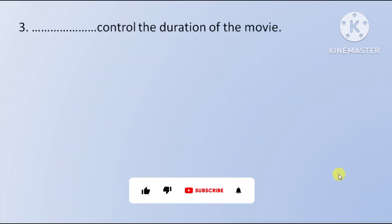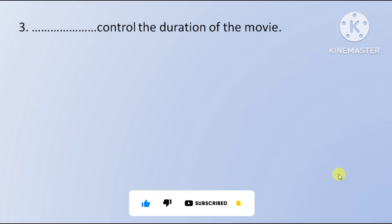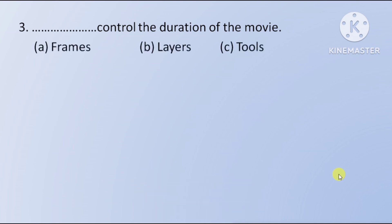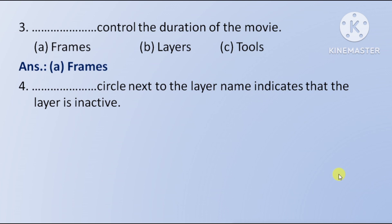Next question: what controls the duration of the movie? Option A: Frames, Option B: Layers, Option C: Tools. The right answer is Option A — Frames.